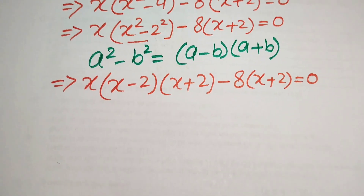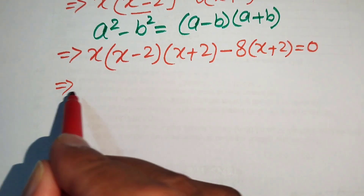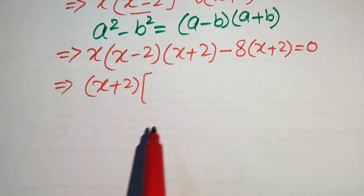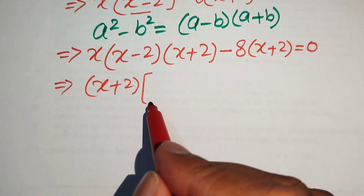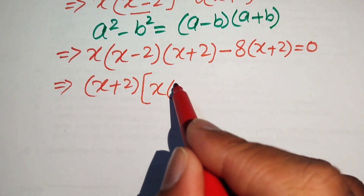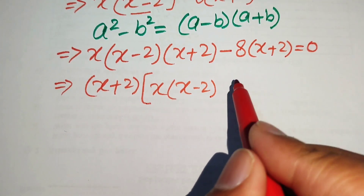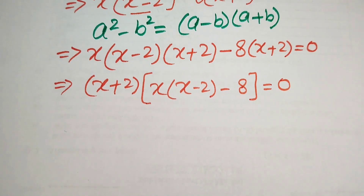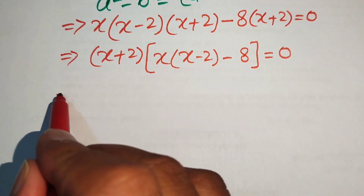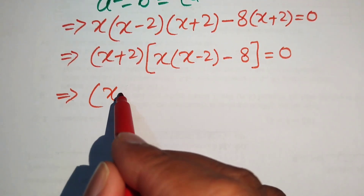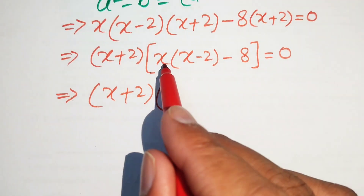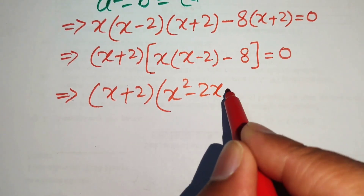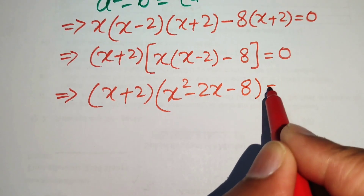Both terms share the common factor (x plus 2). Taking it out: (x plus 2) times [x(x minus 2) minus 8] equals 0. Expanding inside the bracket by multiplying x through: (x plus 2)(x squared minus 2x minus 8) equals 0.